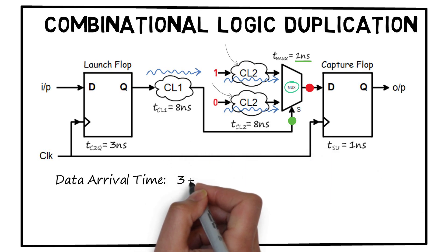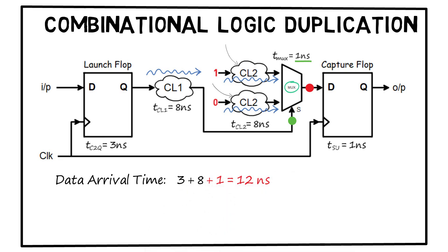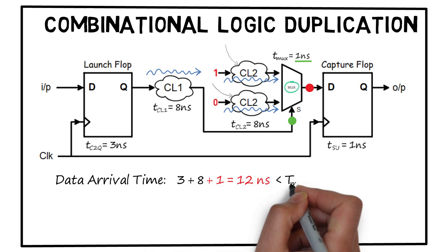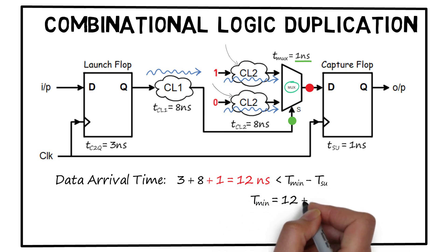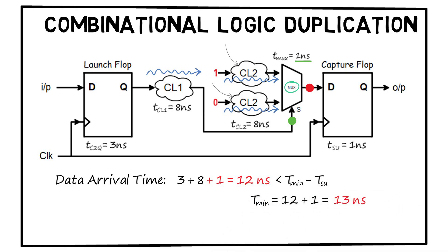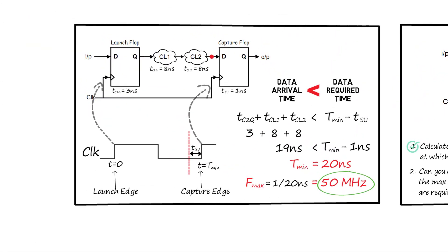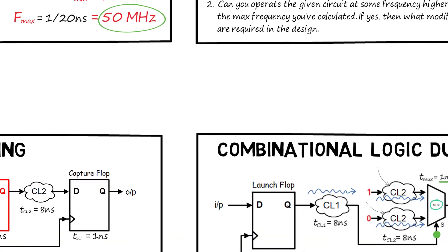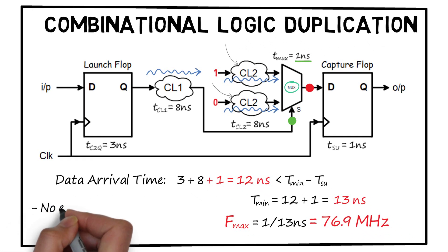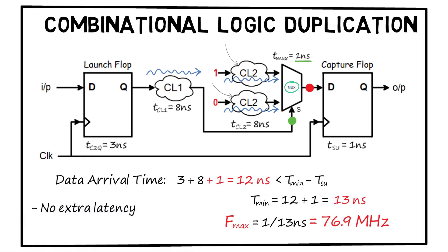With combinational logic duplication, the data arrival time becomes 3 + 8 + 1 = 12 ns. Putting this in the equation, the new minimum time period is 13 ns, and the new maximum clock frequency is 1/13 = 76.9 MHz — greater than the original 50 MHz. Importantly, this method has no latency drawback like pipelining. The only trade-off is increased area.